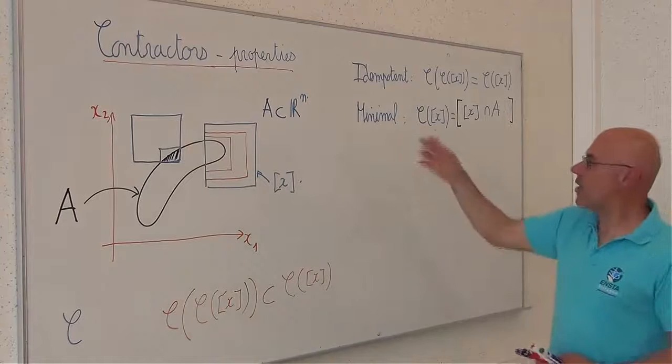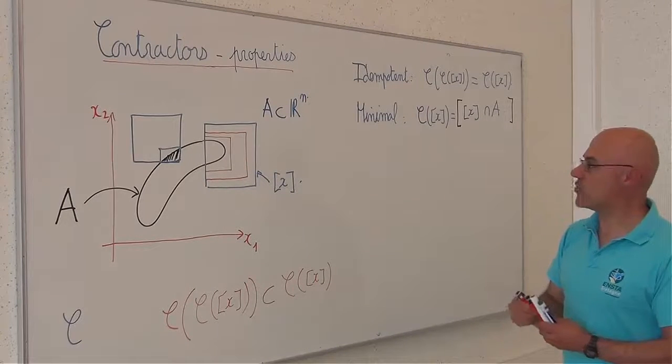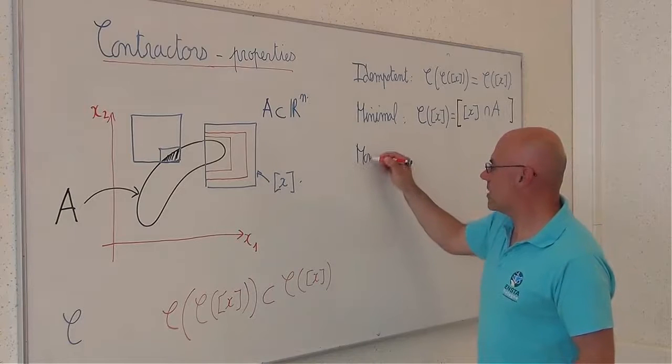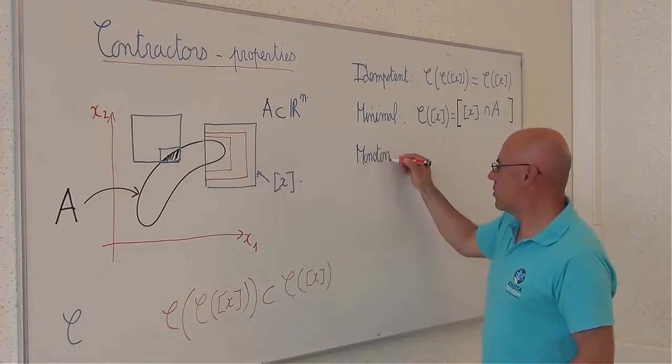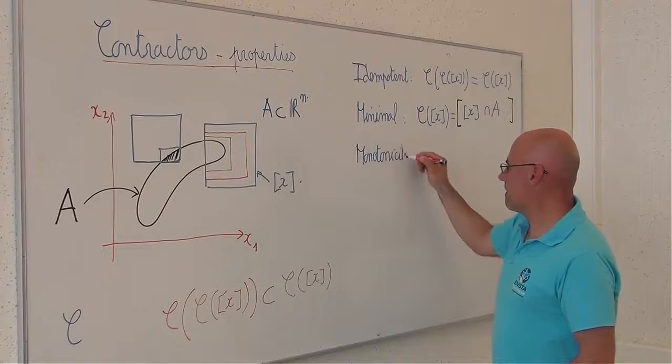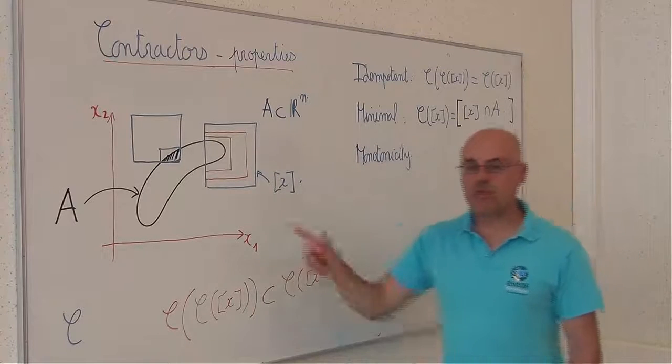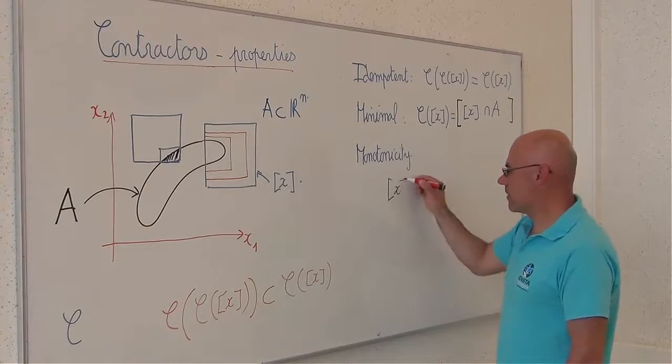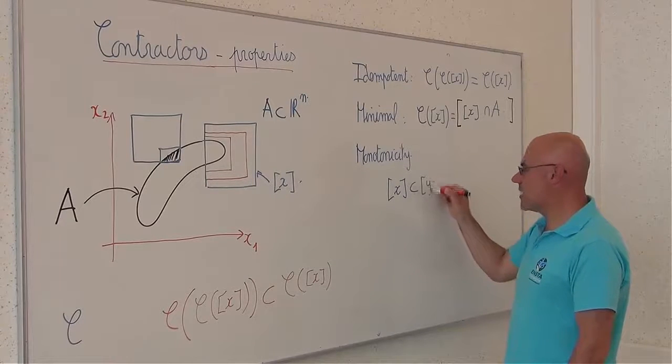Now, the last property that I would like to illustrate is the monotonicity. If I take two boxes, X and Y, such that X is included in Y.